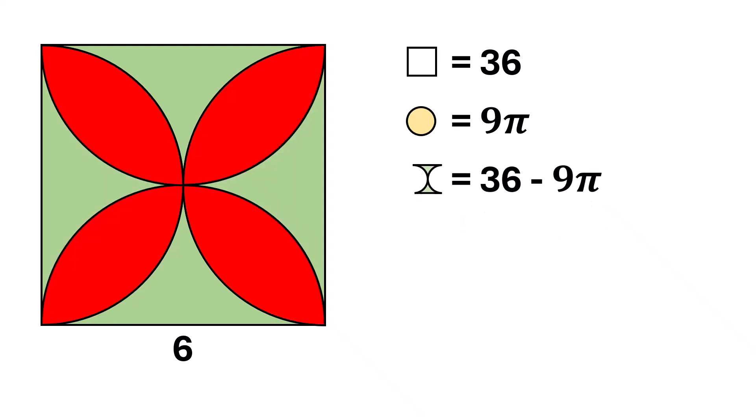Now, here's the key point in our solution. The area of the red region is equal to the area of the square, minus the area of this green shape, minus the area of this green shape. Since both green regions are symmetrical, we can write, area of the red region is equal to 36 minus 2 times 36 minus 9 pi square units.